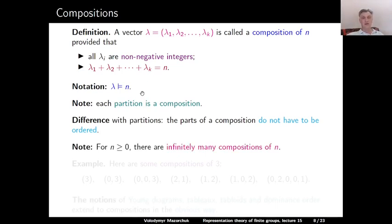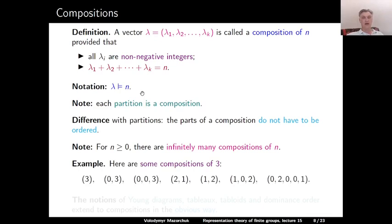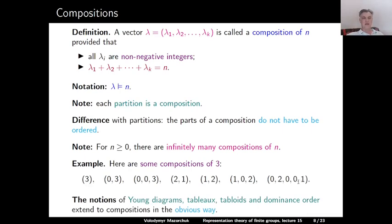In particular, for any n there are infinitely many compositions of n. For example, compositions of 3 include the partition 3, then 03, 003, the partition 21, or 12, then 102, 02001, and so on. The notions of Young diagram, tableaus, tabloids, and the dominance order all extend to the set of all compositions in the obvious way.